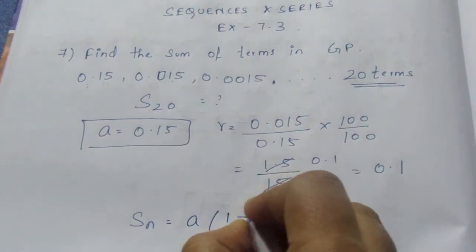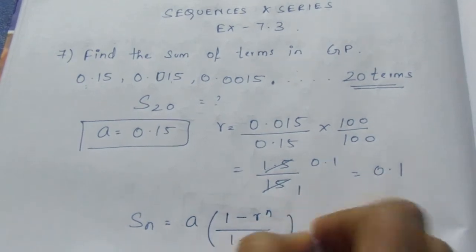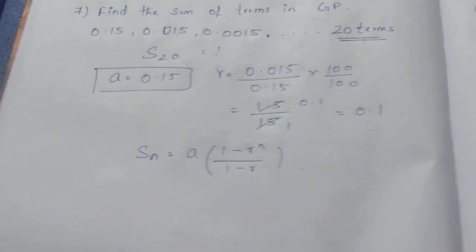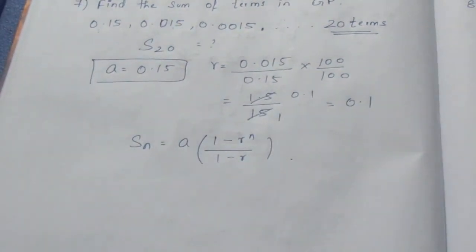A times (1 minus R to the power N) by (1 minus R). So SN formula will be A into (1 minus R to the power N) by (1 minus R).